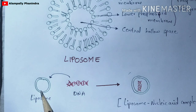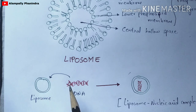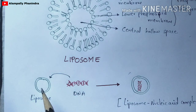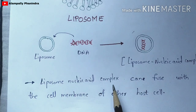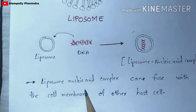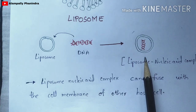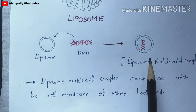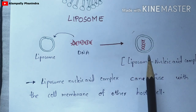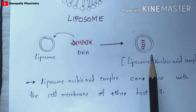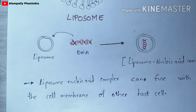We take a liposome — which has a hollow central space with no DNA — and a DNA molecule, then inject the DNA into the interior of the liposome. This leads to the formation of the liposome-nucleic acid complex. This complex has the capacity to move towards another cell, called the host cell, and interact with it.